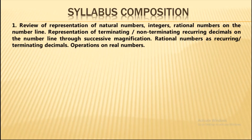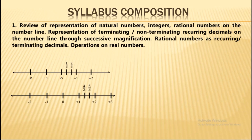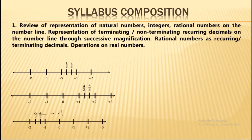The first topic in this unit is a review of representation of natural numbers, integers, and rational numbers on the number line — as we covered in previous classes. For example, on the number line we can represent 1/3, 2/3, 4/3, 5/3, as well as negative numbers.